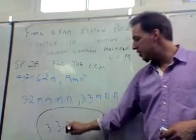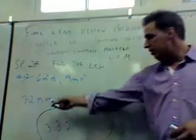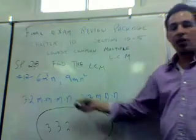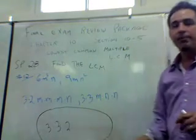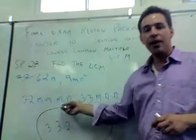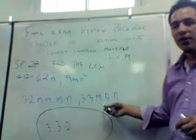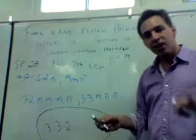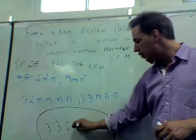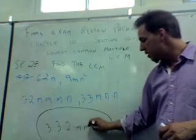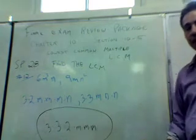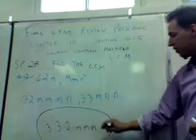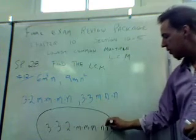2 appears once there. We have to put that in because it appears once. It didn't appear here, but it doesn't matter. As long as it appears somewhere, you have to put it in. M times M times M. It appears 3 times here and once here. So you put it in the greatest number of times it appears. So in other words, M times M times M has to go in there. N appears once there and twice there. So we have to put it in here. N times N.